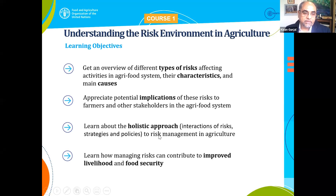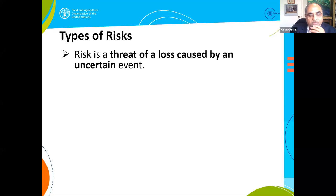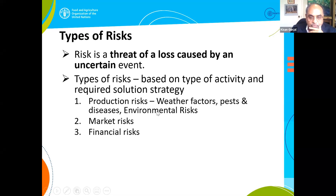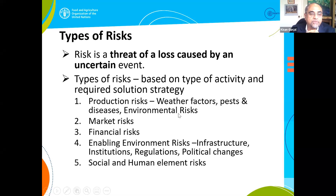This course will indicate how we benefit from these courses. Risk is a threat of loss caused by uncertain events. Based on that, we have different types of events or activities requiring solutions in terms of strategies. These can be production risk, market risk, or finance risk. In production, you have weather factors, pests and diseases, environmental risks. More importantly nowadays, what the World Bank calls the enabling environment — risks at the macro level, including infrastructure, institutions, political changes, Ebola, coronavirus, and other social and human element risks.